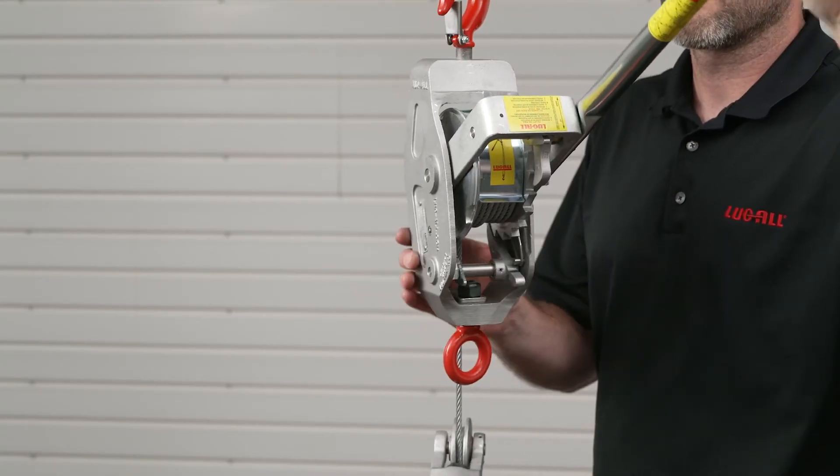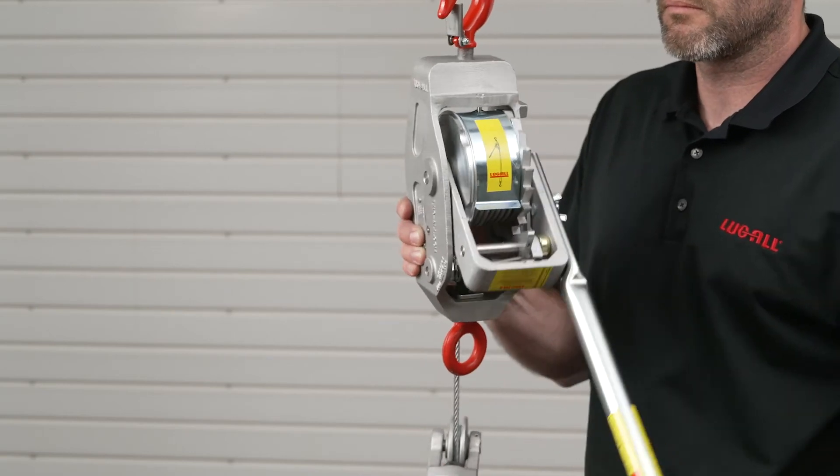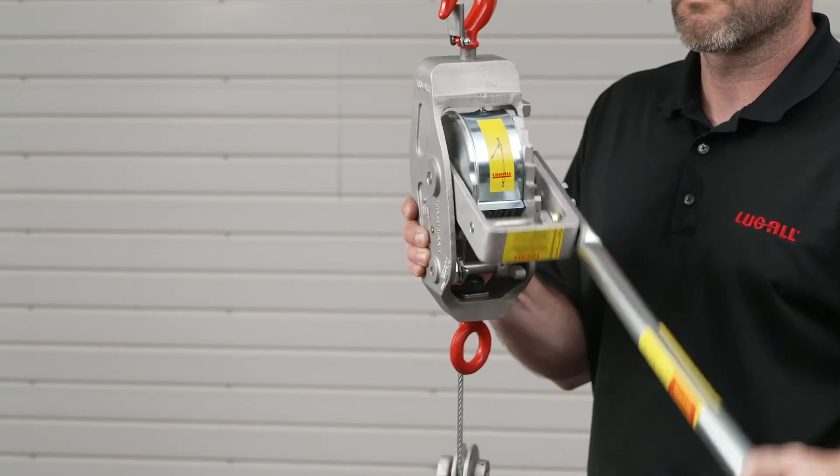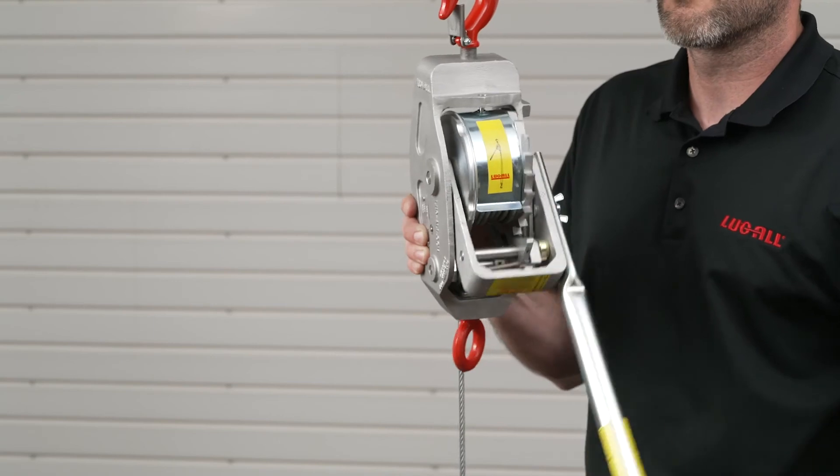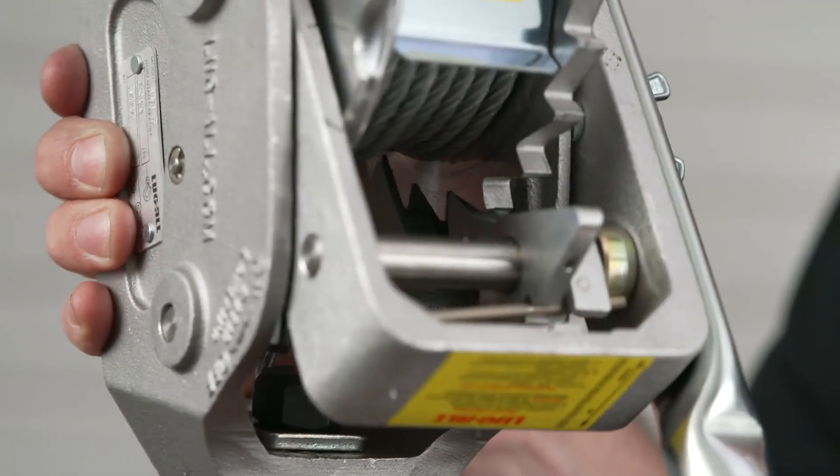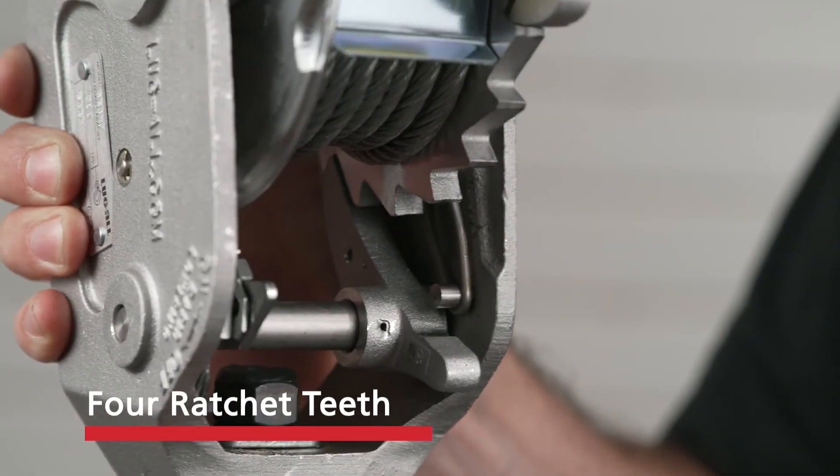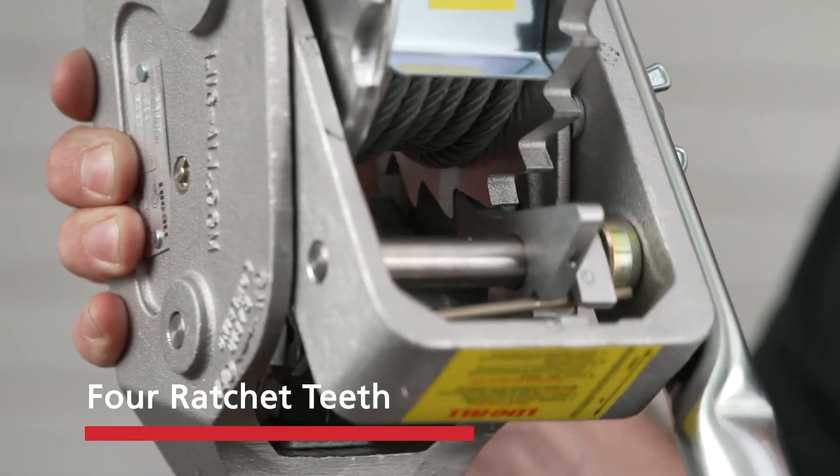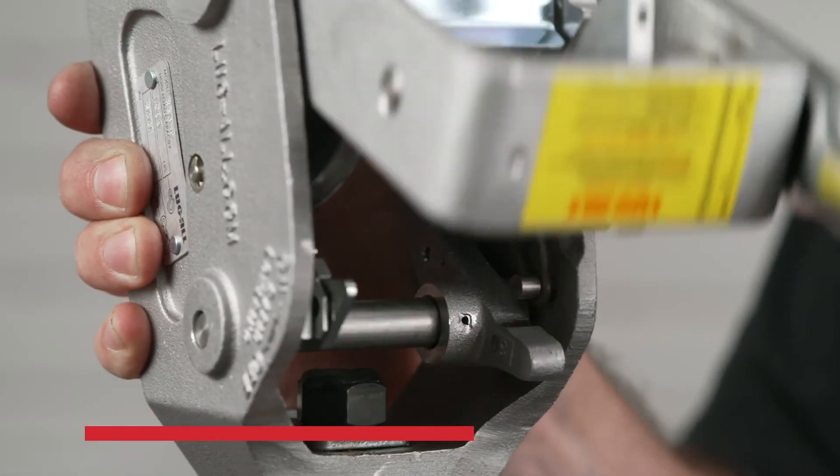With the rapid lowering switch engaged, the initial operation will lower the load by one to four ratchet teeth, depending on the cam position. After the initial operation, each additional use of the rapid lowering function will lower the load by four ratchet teeth.